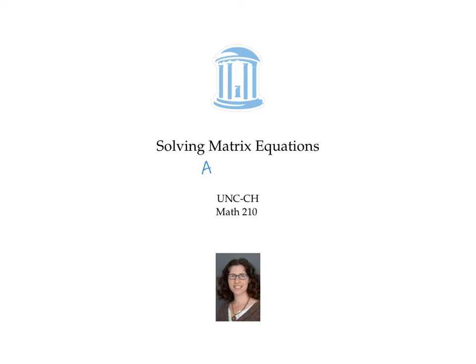In this video, we'll solve equations of the form A times x equals B, where A and B are known matrices and x is an unknown matrix. We're trying to solve for the entries of x that will make this equation hold. We'll focus exclusively on the situation where A is a square matrix — the same number of rows and columns — although x and B might not be square matrices. But a lot of the ideas will pertain to situations where A is not a square matrix.